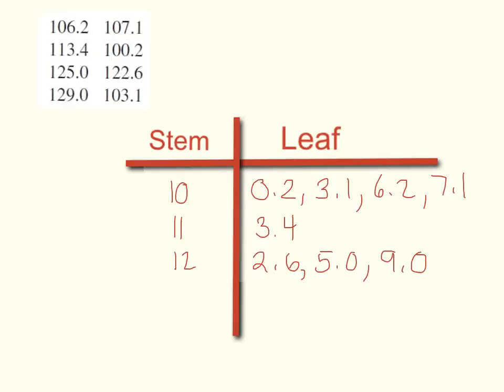So let's take a look and see how you did. My first stem should be 10, because my lowest number is 100.02, or .2, and that means I have 10 tens.